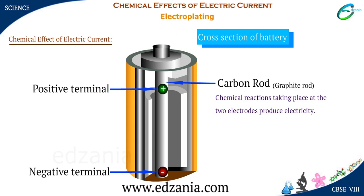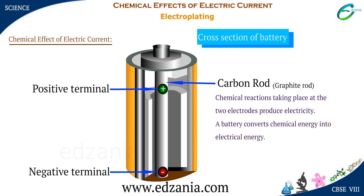The chemical reactions taking place at the two electrodes produce electricity on connecting a circuit between them. In a dry cell, chemical reactions produce electricity. In other words, a battery converts chemical energy into electrical energy.